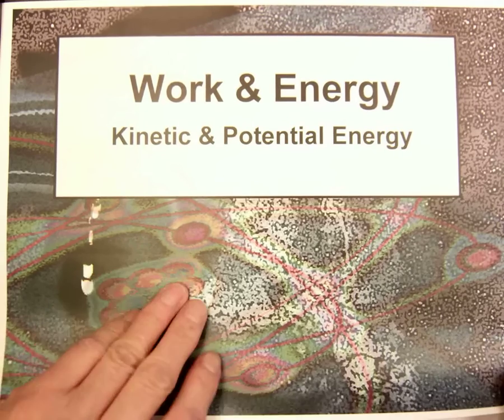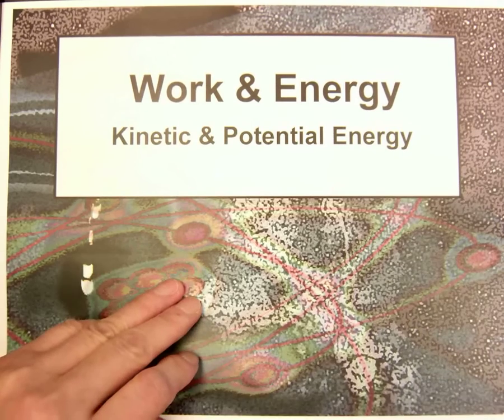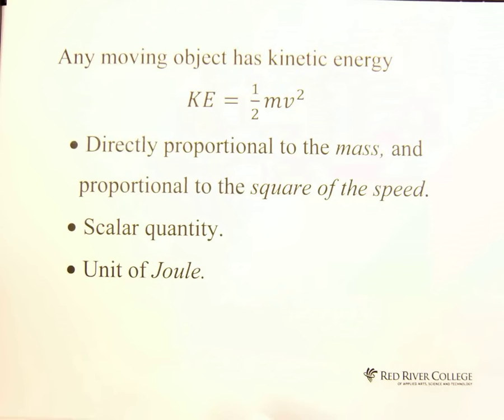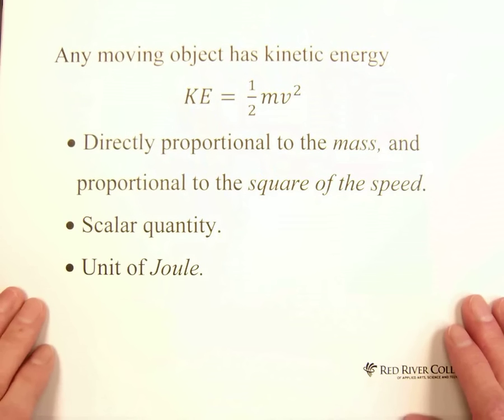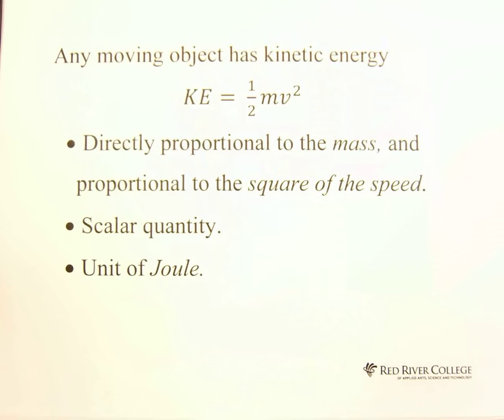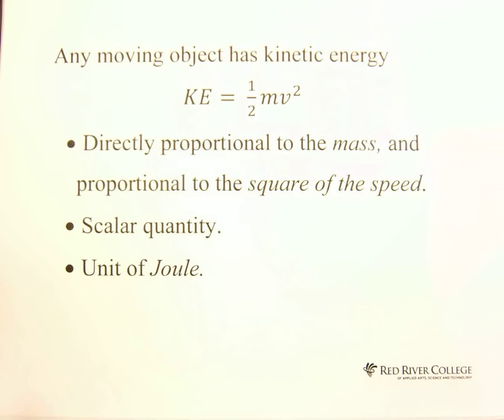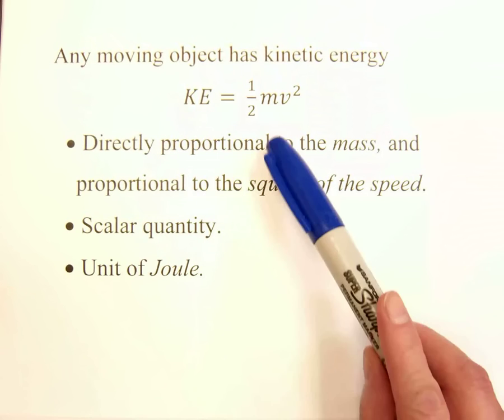As we know, any moving object has kinetic energy. KE, we use KE to represent kinetic energy, equals 1 over 2 mv squared.